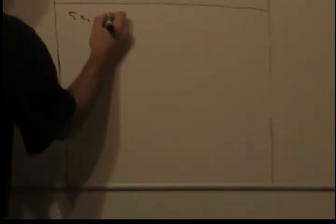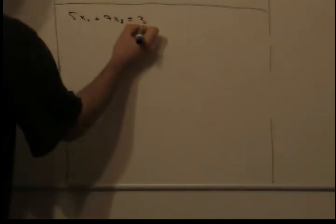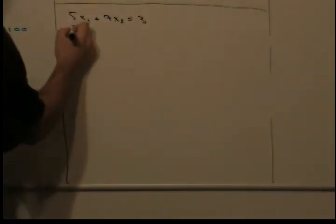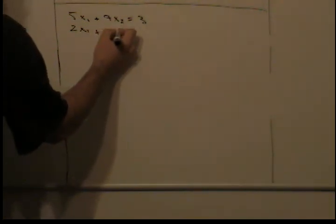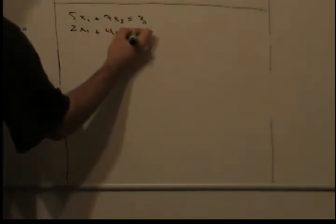5x1 plus 7x2 equals 3, then we have 2x1 plus 4x2 equals 1.